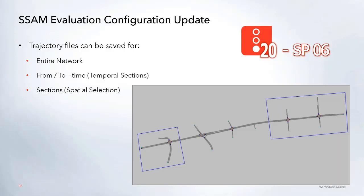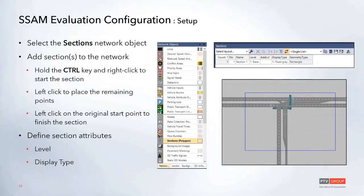New in Service Pack 6, which you can download now in version 2020, you can set up this configuration to include a from and to time, so you can export data for a specific time range. You can also set up different sections in the network to only collect data for certain intersections.